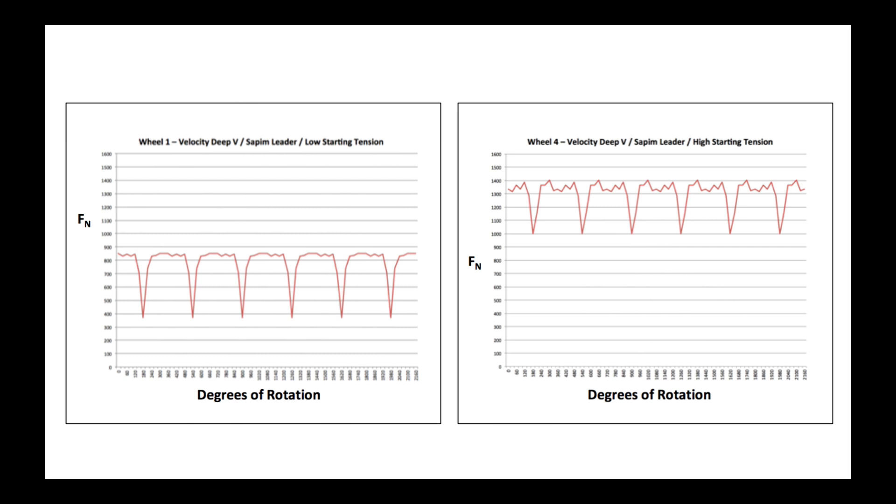And here we're going to see a comparison graphically. On the x-axis is degrees of rotation. You see a sharp downward spike every 360 degrees, and force in newtons is on the y-axis.